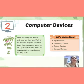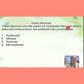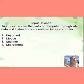In this chapter, we will revise input devices, processing devices, output devices, and storage devices. First of all, input devices. Input devices are the parts of a computer through which data and instructions are entered into a computer. They are the devices that help us enter data into the computer. We have four input devices.